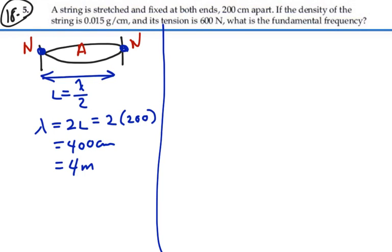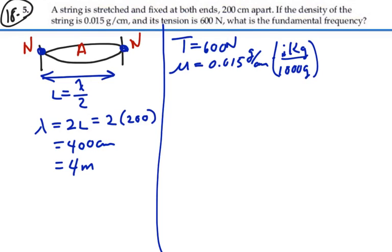We want to find the frequency, so let's find the velocity of propagation. We're told the tension is 600 newtons, and the mass per length is 0.015 grams per centimeter. We need to convert that immediately to kilograms per meter. So we're going to multiply this by 1 kilogram per 1,000 grams, and 100 centimeters per meter. So this is actually going to be equal to 0.0015 kilograms per meter.